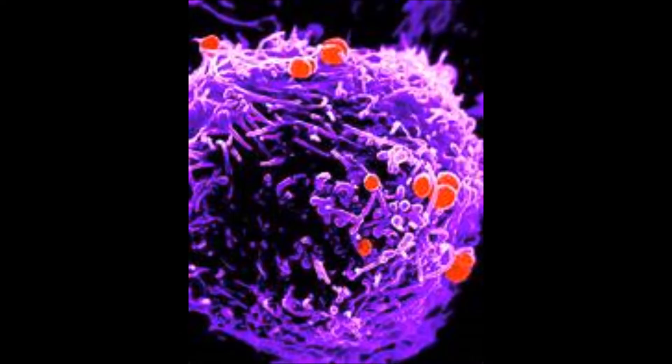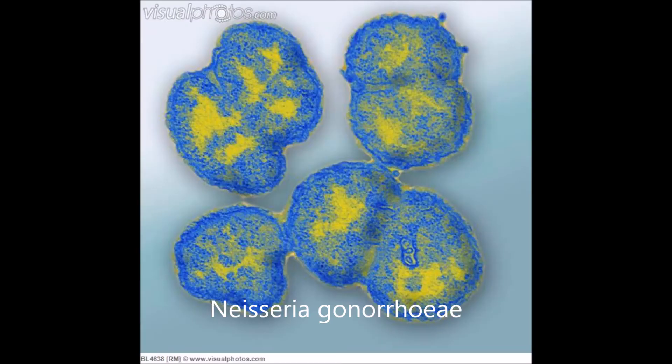These microbes have surface proteins called OPA proteins, which bind to the receptors of immune cells. By doing this, these microbes are able to prevent an immune response. Also, the host is unable to develop an immunological memory against it, which basically means that future reinfections are possible.